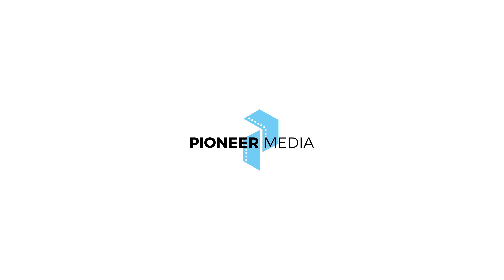At first glance you can obviously see the size difference between the R5C and the A1. The R5C sits at 1.7 pounds and the A1 at 1.6. The R5C is not as heavy as it looks or as I thought. Honestly, where you're going to feel the difference is when putting on lenses — RF lenses are just beefier and heavier than Sony lenses. When it comes down to it, the R5C is not the greatest run-and-gun camera, and here's how.